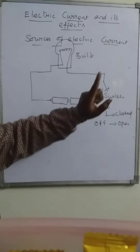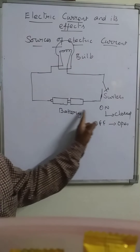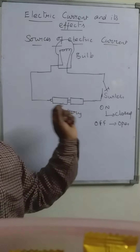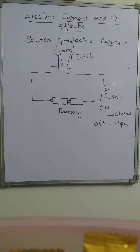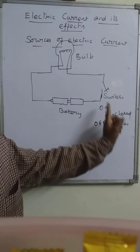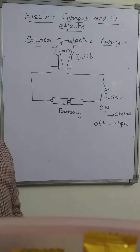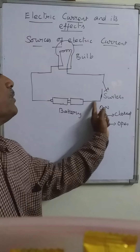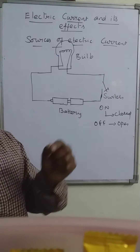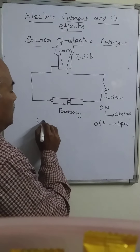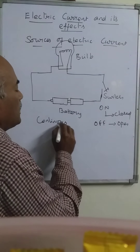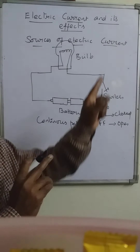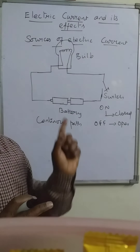If it is kept in the closed or on position, then the electric current flows through this wire and through the bulb, then back to the cell. If it is kept in the open or off position, no current flows. Because for the flow of charges, a continuous path is required — then only it is able to flow through the given path.